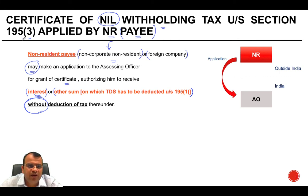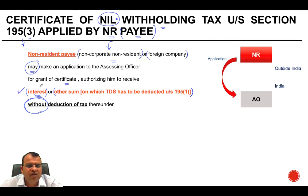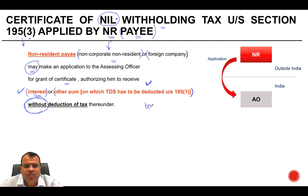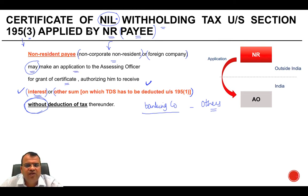Under Section 195(3), the application can be made for nil withholding tax. The payments covered are interest or other sums which are chargeable to tax. Generally, recipients for this purpose are classified into two categories: one is a banking company and the other is all others.